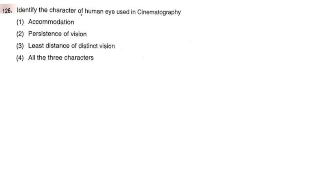Next question: Identify the character of the human eye used in cinematography. Options: accommodation; persistence of vision; least distance of distinct vision; all three. The correct option is option number 2: persistence of vision.